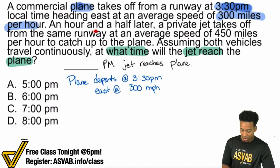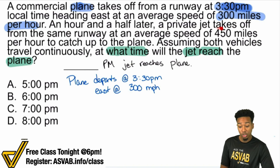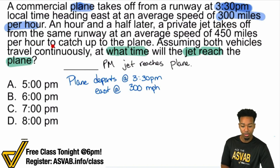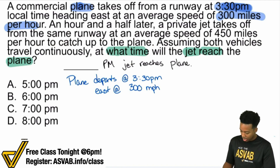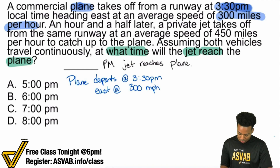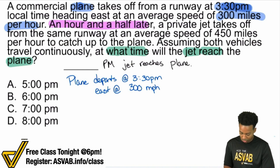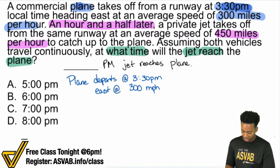An hour and a half later, a private jet takes off from the same runway at an average speed of 450 miles per hour in order to catch up to the plane. So I'll go ahead and highlight that in purple. An hour and a half later, the private jet takes off from the same runway at 450 miles per hour to catch up to the plane.